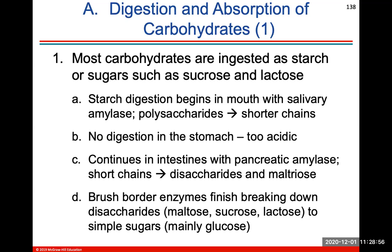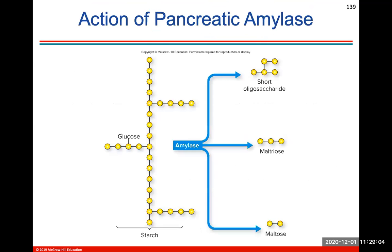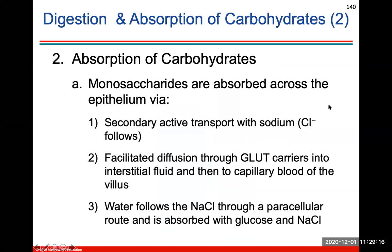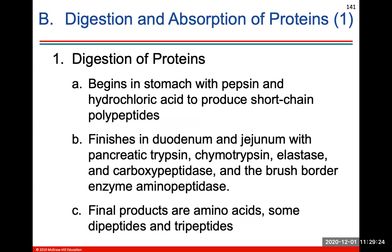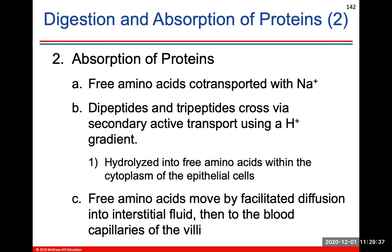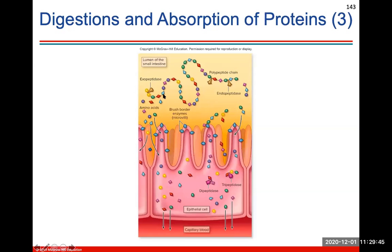Most carbohydrates are ingested as starch or sugars such as sucrose or lactose, and these will be broken down in the stomach and small intestine. This shows the action of pancreatic amylase — how it breaks apart a long starch molecule into its monomers or shorter disaccharide molecules. Carbohydrates are absorbed across the epithelium via secondary transport with sodium. Digestion of proteins begins in your stomach with pepsin and hydrochloric acid to produce short-chain polypeptides, then it's finished in the small intestine. The final products of proteins are amino acids, which are eventually absorbed into the small intestine via capillary blood.